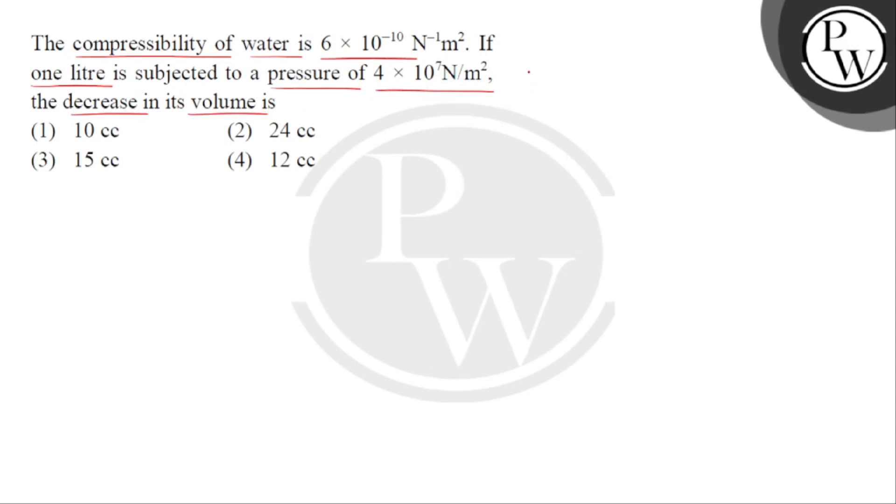Given: compressibility of water is 6 × 10^-10 meter square per newton. Pressure applied is 4 × 10^7 newton per meter square, and volume of water is 1 liter, which we can express in SI units as 10^-3 cubic meter.